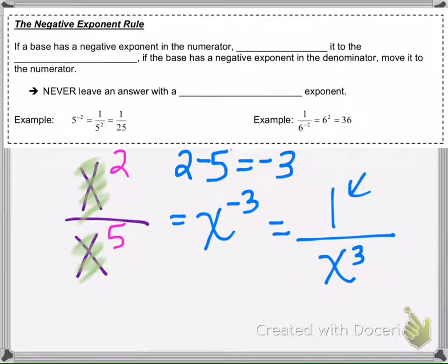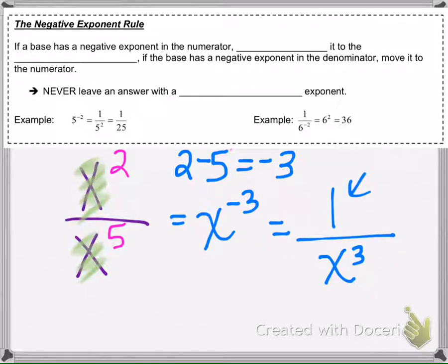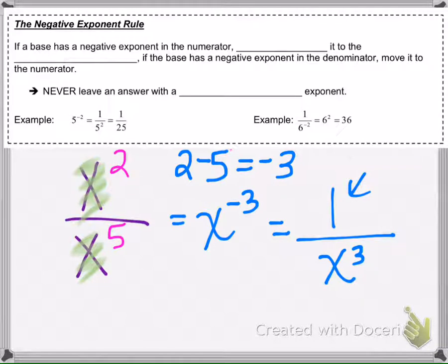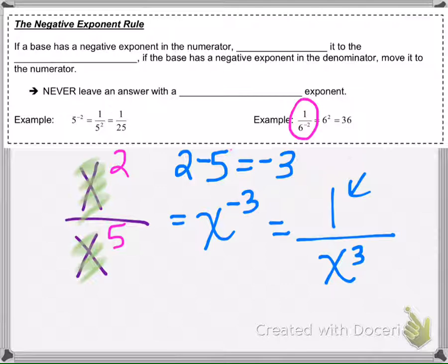Now what we're focusing on is negative exponents that could already be given to us in the denominator as negative. So when we subtract the exponents and we get a negative, we put them to the bottom. If we subtract the exponents and it's positive, we put them on the top. But now we're talking about what if the original problem already has negative exponents given to us in the denominator.